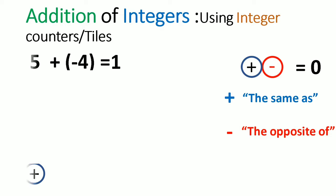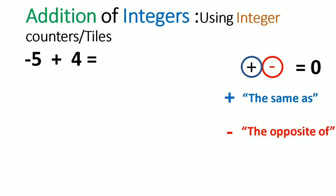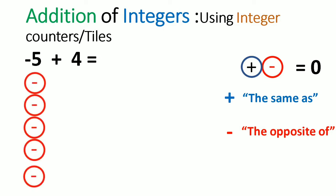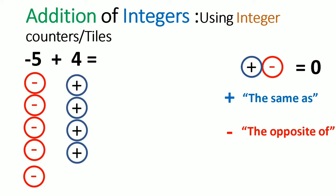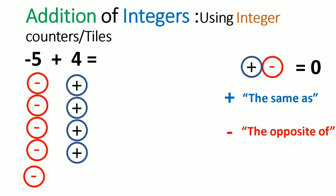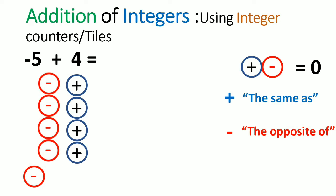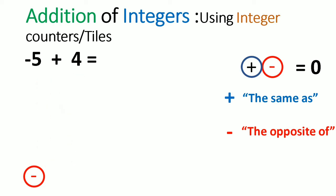Let's look at another example. We would represent negative 5 with 5 negative integer counters, and positive 4 with 4 positive integer counters. We then group the counters in pairs — these nullify each other — leaving us with 1 negative. So negative 5 plus 4 would give us negative 1.